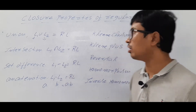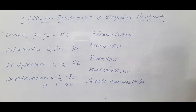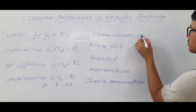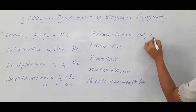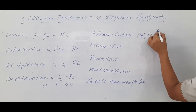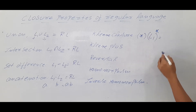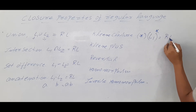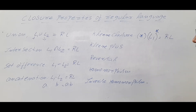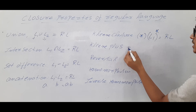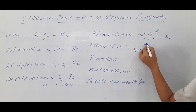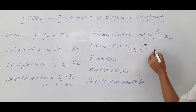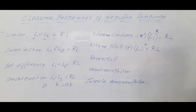Now coming to Kleene closure — I think everyone knows what Kleene closure is; it is represented using the star symbol. If L1 is a regular language and I apply Kleene closure, the language I get is also regular. Coming to Kleene plus, represented using the plus symbol — if L1 is a regular language, Kleene plus also generates a regular language.